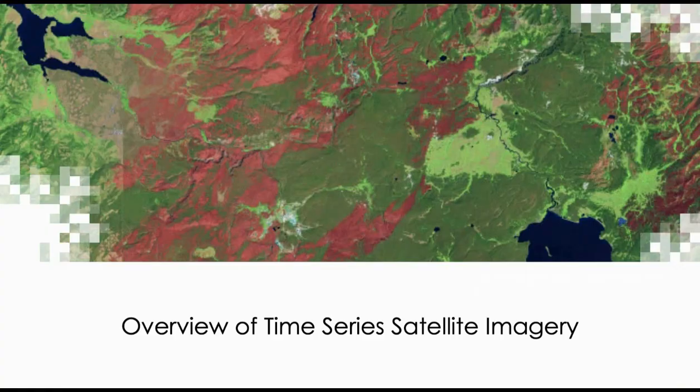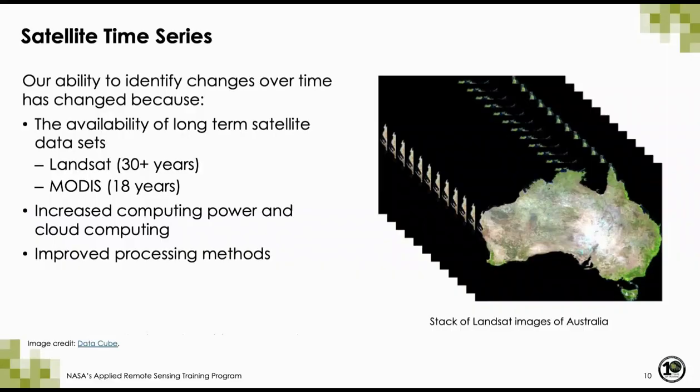Starting with an overview of time series satellite imagery: in the past, the only way we could easily use satellite Earth observations for analyzing change over time was to use two or three dates of imagery. In recent years, that has changed because of the availability of long-term satellite data sets like Landsat and MODIS, increased computing power and cloud computing, and improved algorithms for processing long time series of data.